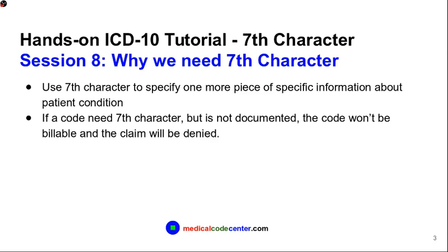So why do we need a 7th character? We use the 7th character to specify one more piece of specific information about a patient's condition. If a code needs a 7th character but it is not documented, the code won't be billable and the claim will be denied.